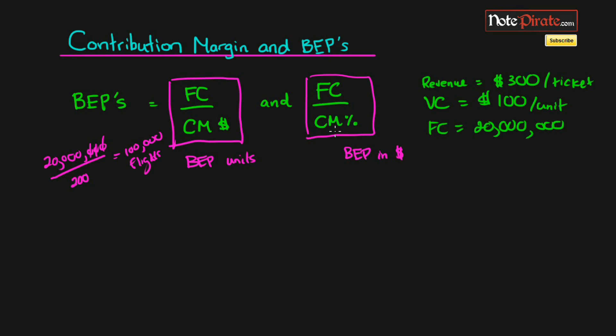And the way we'll get that is by just taking our contribution margin, which is $200, which is our revenue, subtract our variable cost. And then we're going to divide that by the revenue.